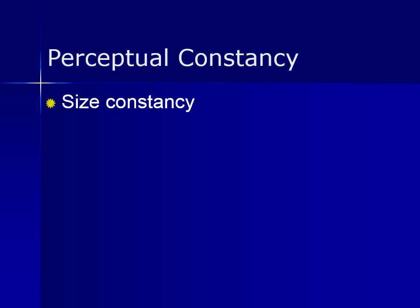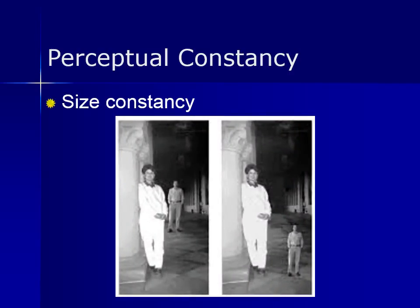For size constancy, the size of objects remains relatively constant even though images on our retina change in size with variations in distance. This perceptual process allows us to see objects in a stable way by taking distance into account. In the three-dimensional world, this principle allows us to perceive a tall person as tall, whether they are standing next to us or off in the distance. Perceptual constancies are important because they enable us to perceive the basic, unchanging nature of objects and scenes in the world around us.